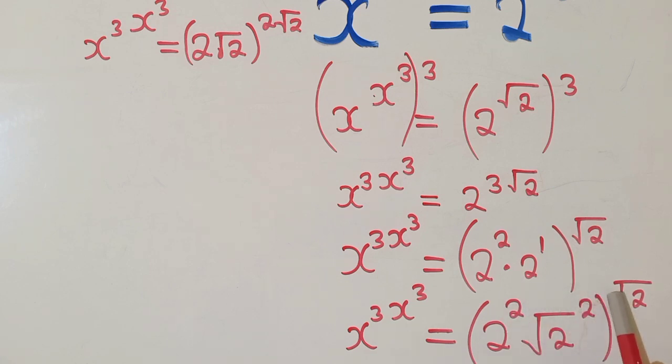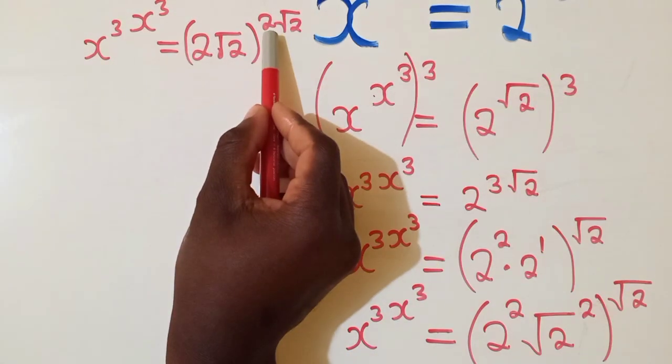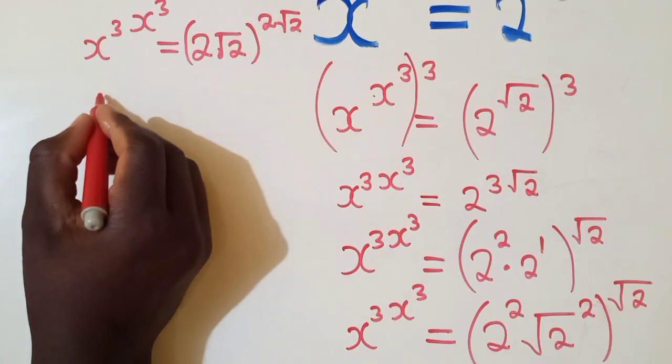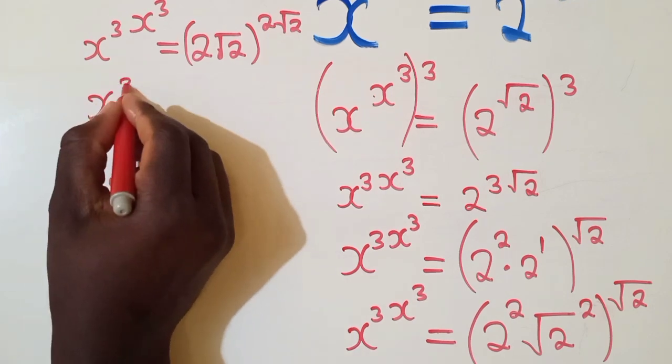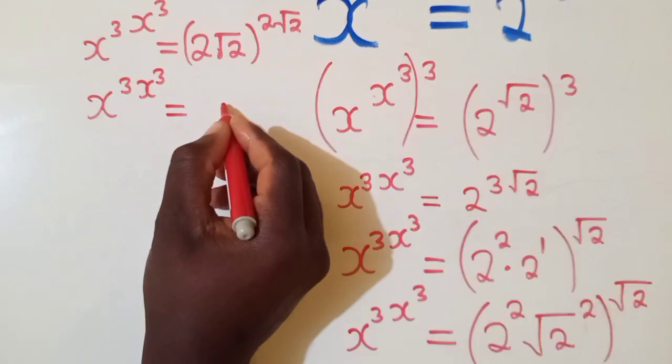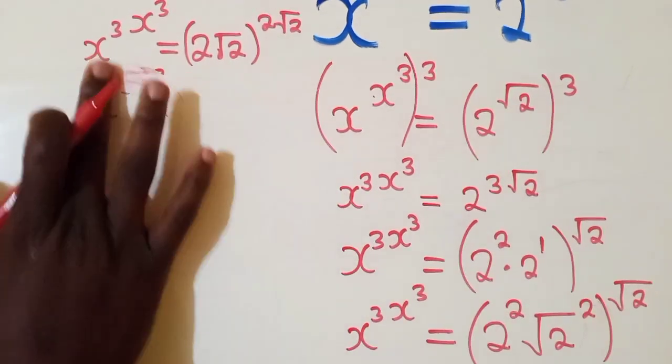So this is what we've done here. So from here we can say x power 3 x power 3 is equal to - actually here we just say...